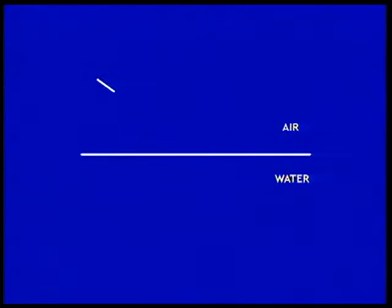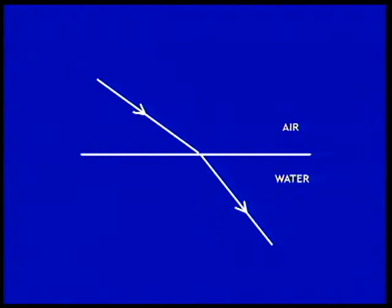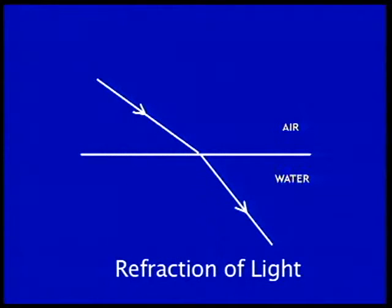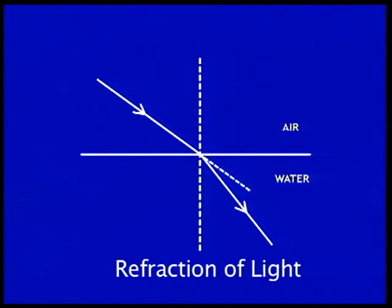When light travels obliquely from one medium to another, it changes its direction of propagation. This phenomenon is known as refraction of light. If we imagine a normal to the surface of water, we can observe that when light enters water, it bends towards the normal.